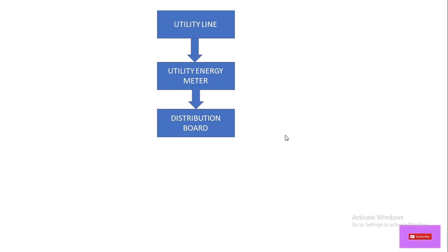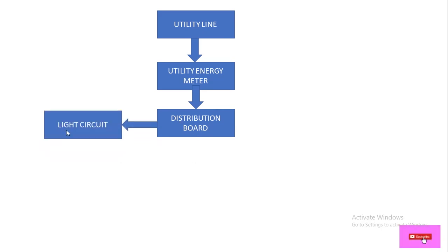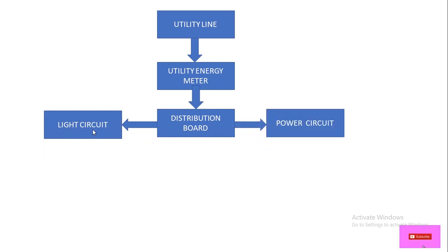After the utility energy meter, the power is fed to our main DB — distribution board — in our house. From the distribution board we have two circuits: one is the light circuit and another is the power circuit. We differentiate the circuit for lighting purpose and for power socket purpose.